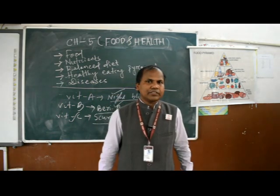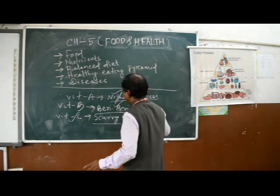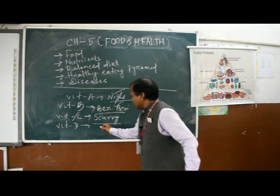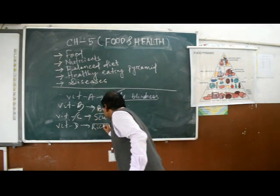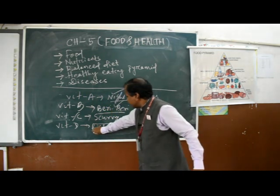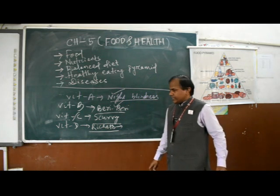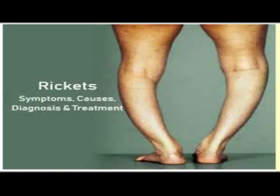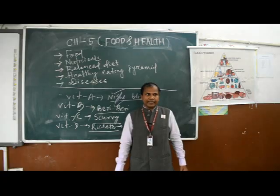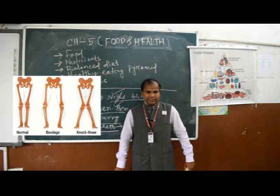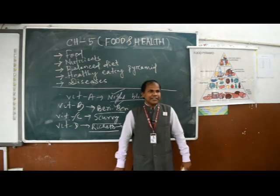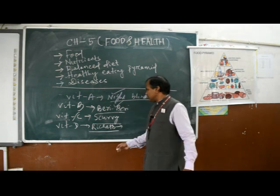Another deficiency disease is due to Vitamin D, and the disease is called rickets. The symptoms of rickets are bow legs — where the legs curve outward — or knee knock, where the legs curve inward. These are the two main symptoms of rickets.